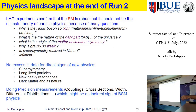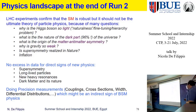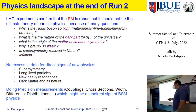At the end of Run 2 — though the analysis of Run 2 data is not finished yet — what we learned is that the standard model is quite robust. However, it should not be the ultimate theory of particle physics because of many open questions: why is the Higgs so light? What is the nature of dark matter? What is the origin of matter-antimatter asymmetry? Why is gravity so weak? Is supersymmetry realized in nature? And what is the mechanism for inflation?